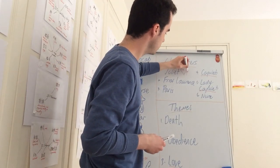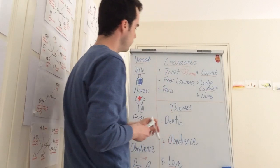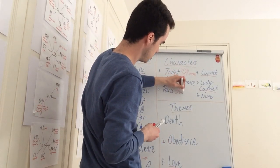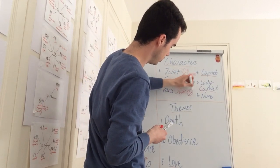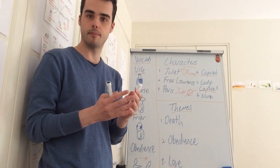Juliet loves Romeo, as we see right here, but Juliet does not love Paris. Put a little cross right there. So that's an important part.